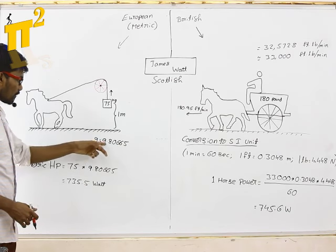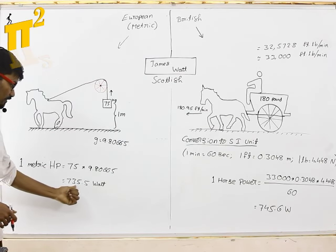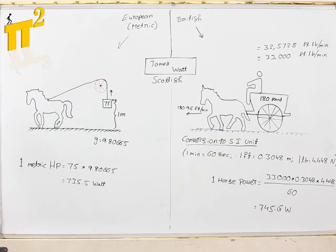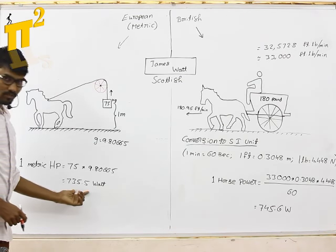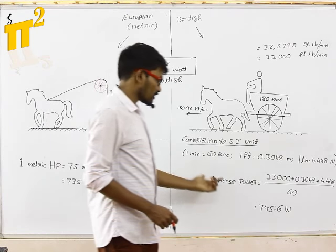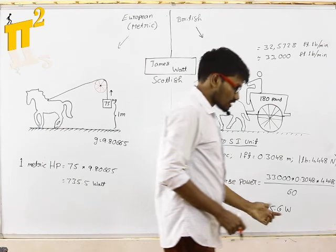So if you multiply these two, it turns out to be 735.5 watts. So one metric HP is equal to this much, one British HP is equal to this much.